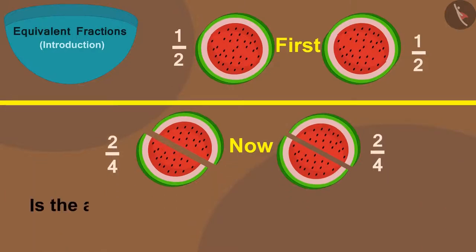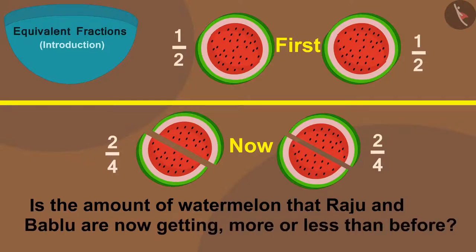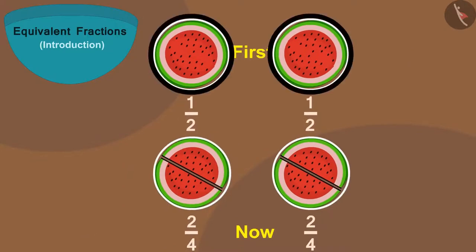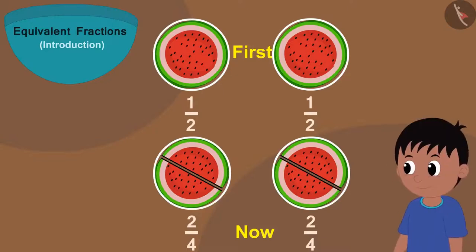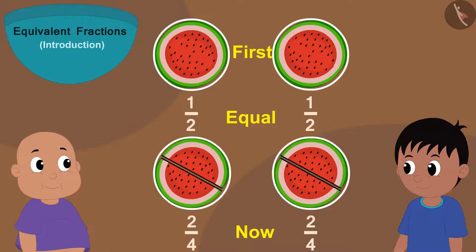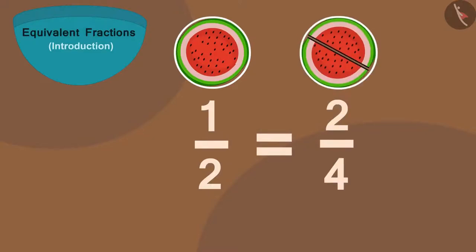Children, is the amount of watermelon that Raju and Babalu are now getting more or less than before? Absolutely right — both are getting as much watermelon as before. Earlier they were getting one part out of two, that is one by two. And now they are getting two parts out of four, that is two by four. This one part is equal to these two small parts. Because the amount of watermelon is still the same, we can write that the fraction one by two is equal to the fraction two by four.